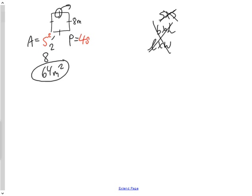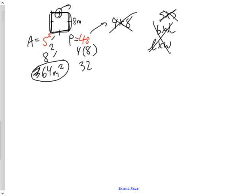Write your formula, substitute the information, and simplify to get an answer. For the perimeter, the formula is 4s. We substitute 8 for the side length using brackets — writing 4(8) — to avoid confusion with the variable x. That gives us 32, so the perimeter of the square is 32 meters.